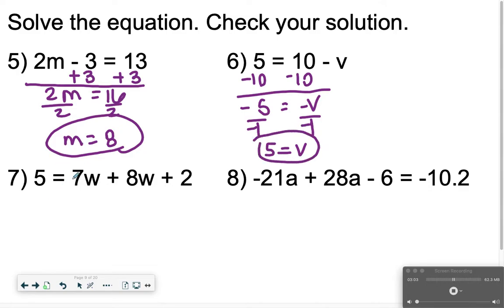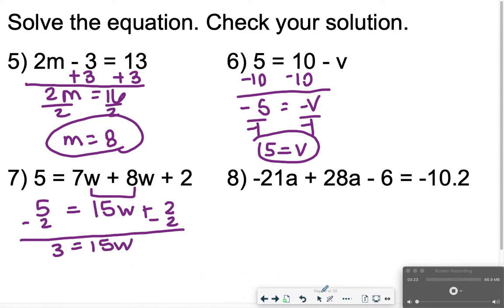Number 7, I notice I have some like terms. 7w plus 8w, that is 15w plus 2, and then equals 5 still. And then I'm going to subtract 2 from both sides to get 3 equals 15w. Then I'm going to divide both sides by 15. And notice 3 over 15, or 3 divided by 15, I can just simplify that fraction to 1 fifth. If you wrote 0.2, that's the same thing, but I like to just simplify if it's a fraction.